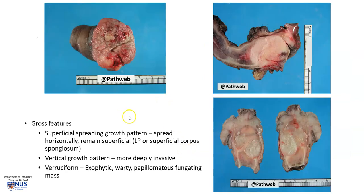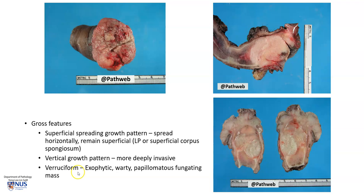Here are some other examples. For the gross features, this tumor can either spread in a vertical manner — invading deeply — or it can spread more superficially, similar to melanoma. The superficial spreading growth pattern often remains fairly superficial in the lamina propria or the superficial layers of the corpus spongiosum, whereas in the vertical growth pattern the invasion is deeper. There is also a verruciform squamous cell carcinoma, which is basically a cauliflower-like exophytic, warty, papillomatous tumor mass.